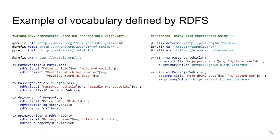A complete RDFS vocabulary example in Turtle: we define a MotorVehicle class with labels and comments in multiple languages, a PassengerVehicle as a subclass, a 'driver' property with domain and range, and a 'primaryDriver' sub-property. The vocabulary is used in data on the right: a car is typed as PassengerVehicle and has a primaryDriver. This illustrates how vocabulary definitions and data usage work together.